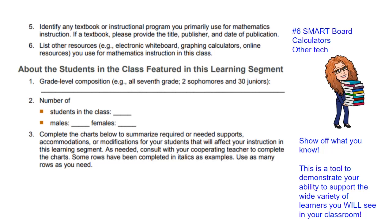Number of students, grade level composition if you have them — if you have a class with multiple levels of students, also males and females in your class. And then finally this next section: you need to show off what you know. This chart is supposed to summarize needed and required supports, accommodations, and modifications for students with special learning needs. Use this as a tool to demonstrate your ability to support a wide variety of learners that you will see in your classroom, even though you may not have them. It's probably advisable to make sure that you've at least planned to have these types of students, so it's a good idea to not leave any of these blank.